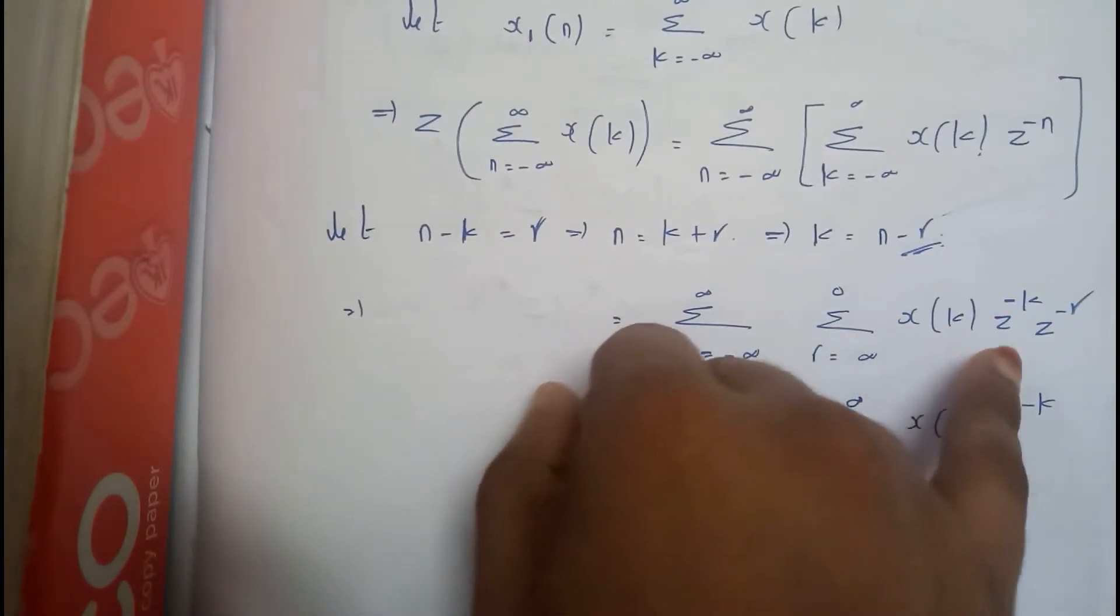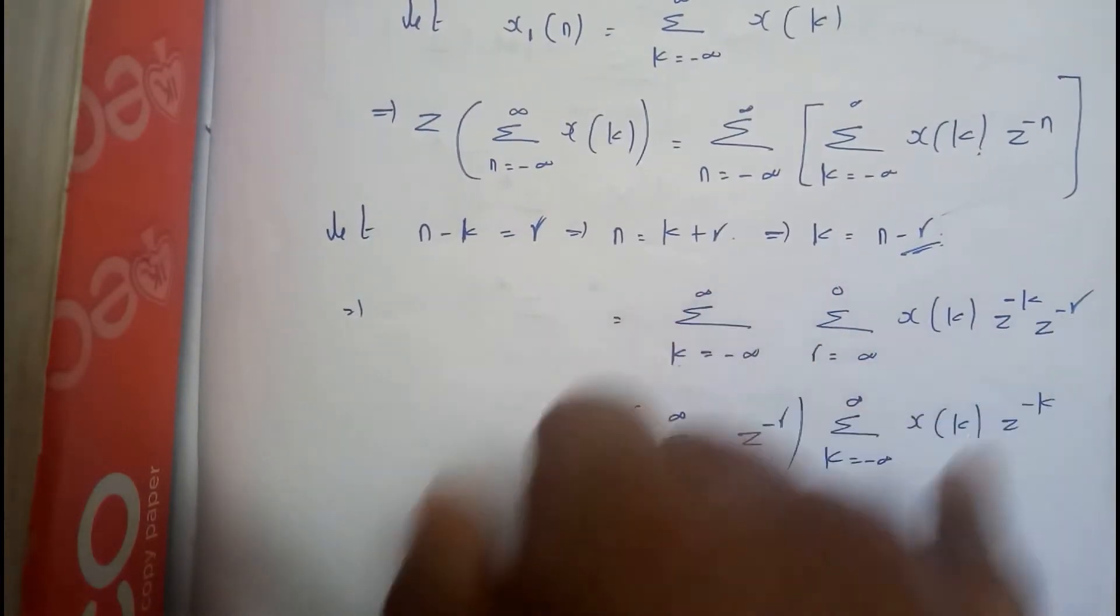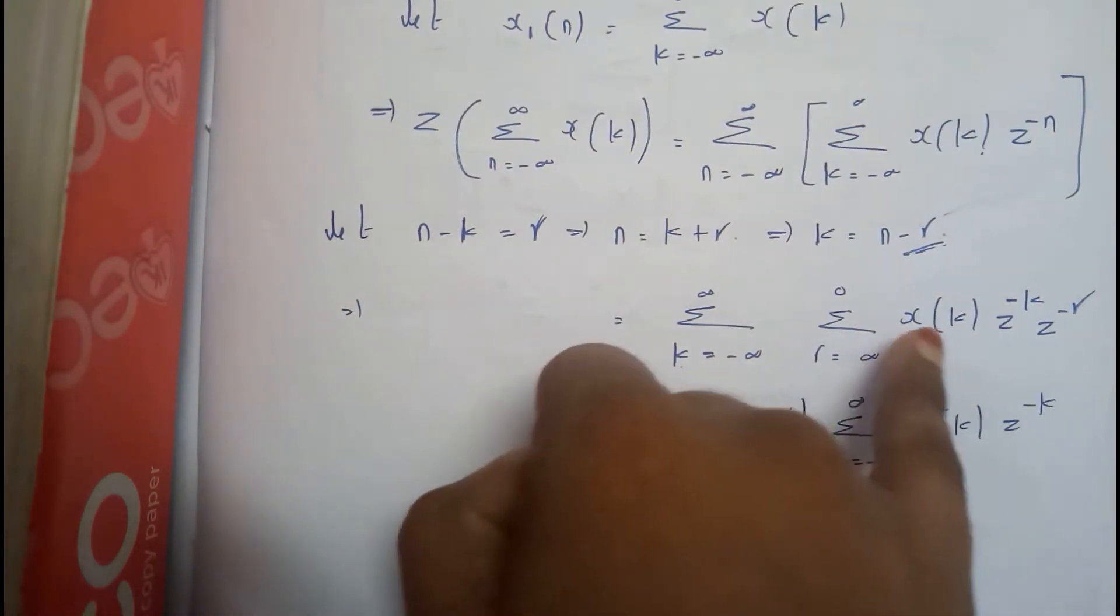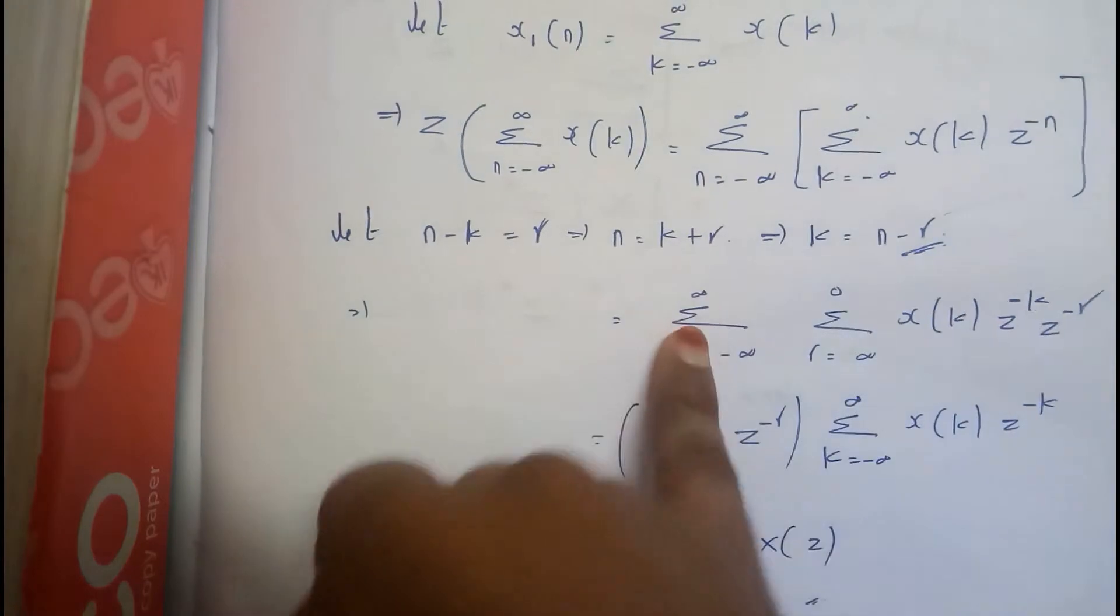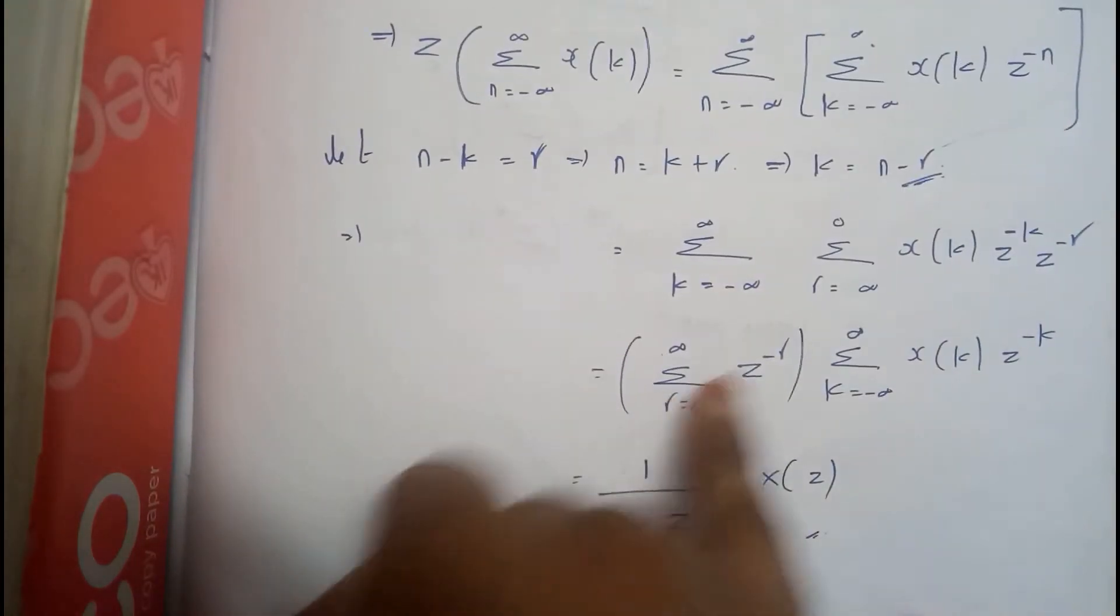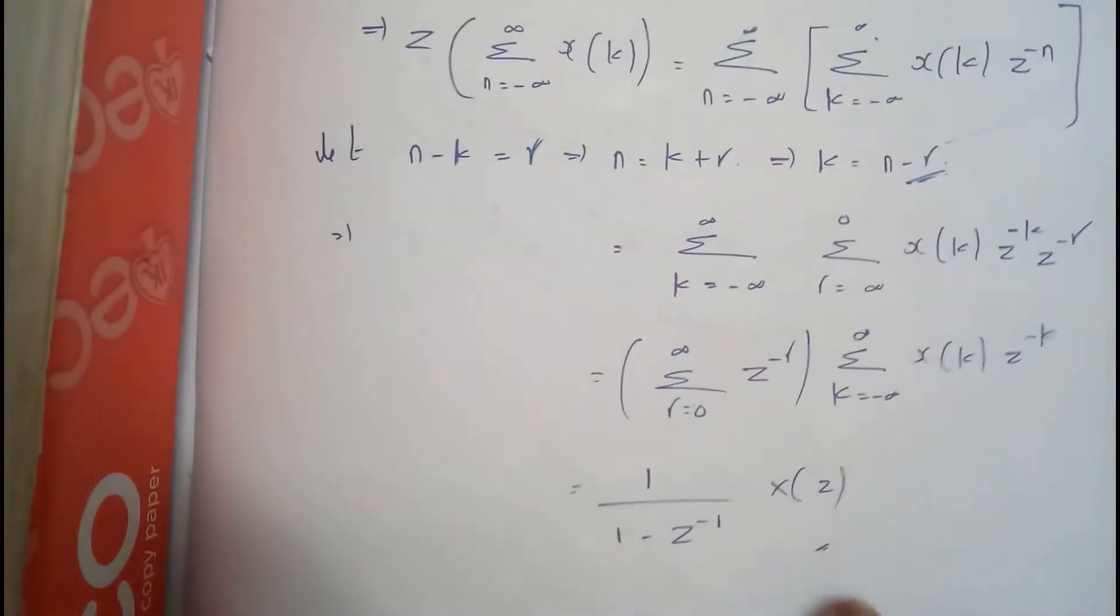x(k), z to the power of minus k, z to the power of minus r. I will be pushing this to the outside and this to the outside so that it will be really easy for us, as it is in terms of r and this is also in terms of r.